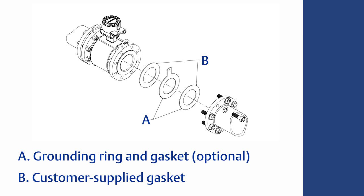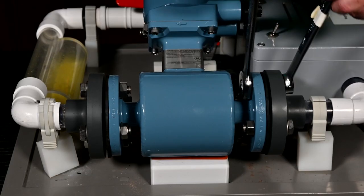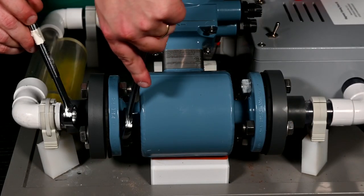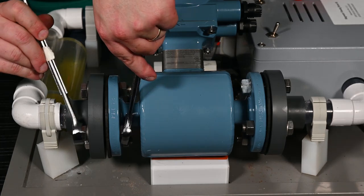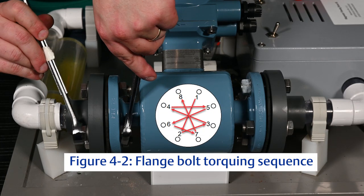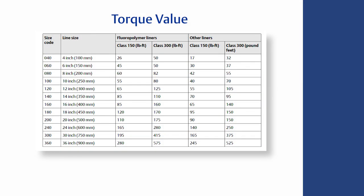If using spiral wound or flexitalic gaskets, lining protectors must be used. Tighten the bolts using a star pattern. Tighten bolts in 20% increments, alternating between upstream and downstream flanges. Continue tightening bolts in this pattern in 20% increments until the specified torque value is reached.